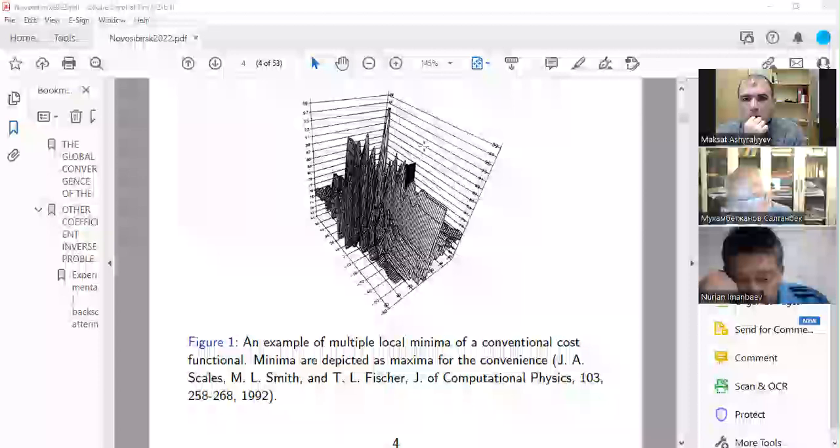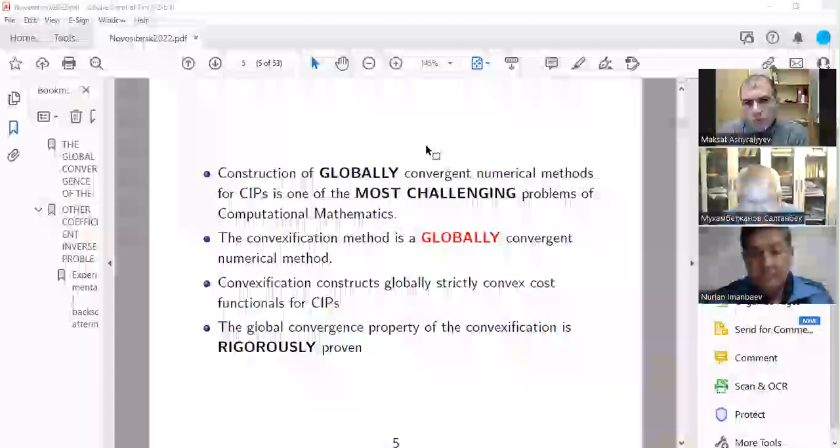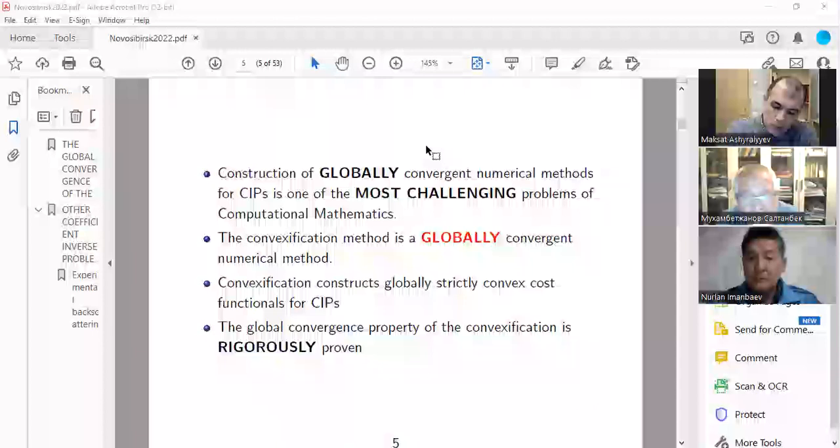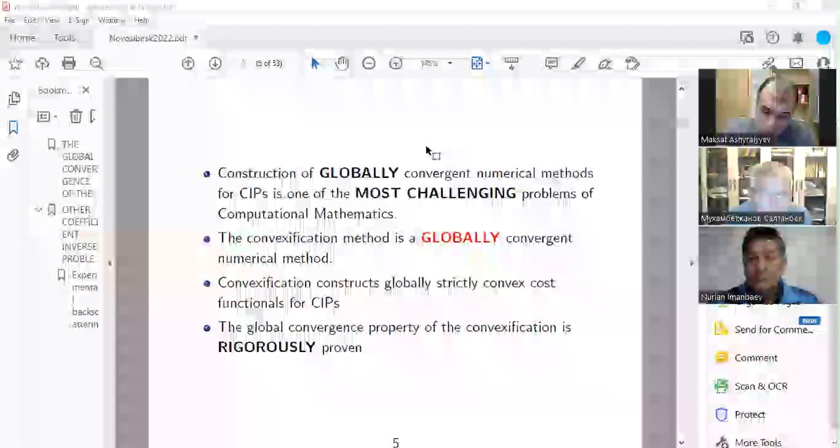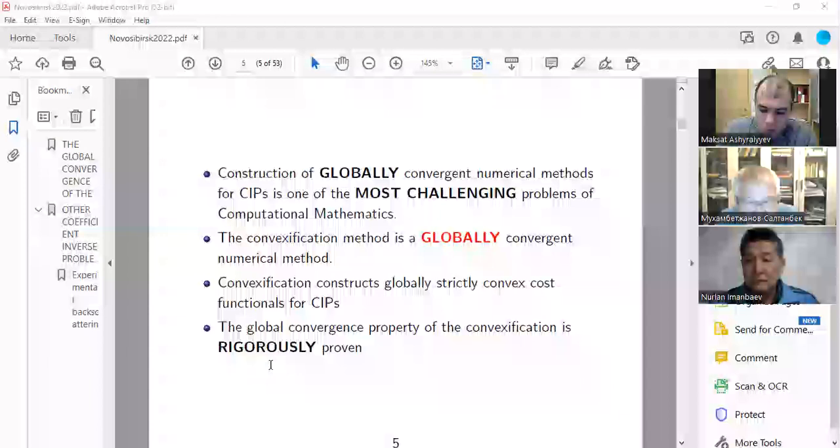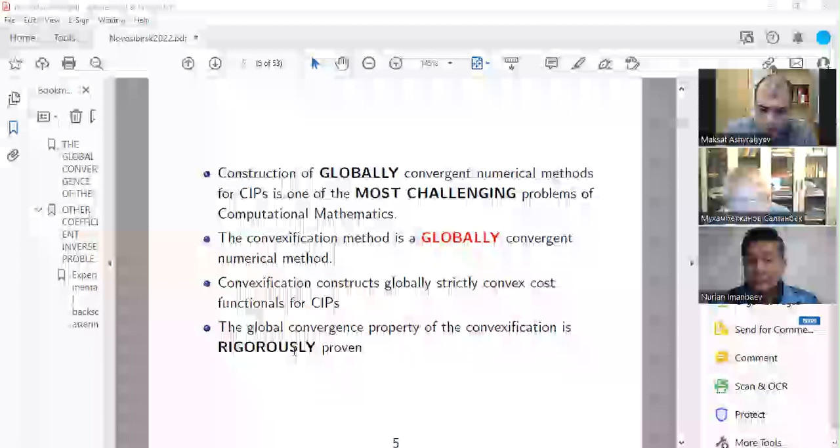So in other words, this is a very important problem because inverse problems are applied ones. What can it do? Therefore, construction of globally convergent numerical methods is indeed one of the most challenging problems of computational mathematics. One of the most challenging, and the convexification method is basically unique at this point, globally convergent method. And global convergence is proven rigorously and then verified numerically.